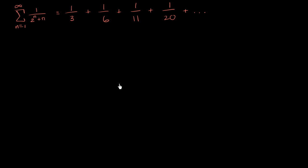It feels like this thing could converge. All of our terms are positive, but they are getting smaller and smaller quite fast. If we look at the behavior of the terms as n gets larger and larger, we see that the two to the n in the denominator will grow much, much faster than n. So this will start to behave like one over two to the n, which is a clue of something we might be able to use for the comparison test.